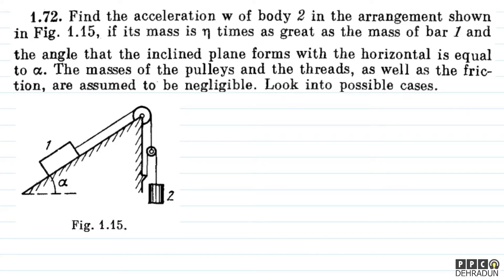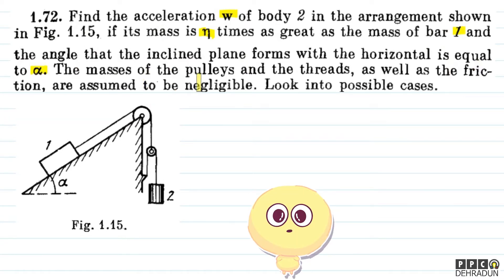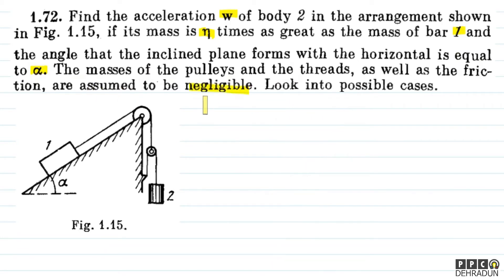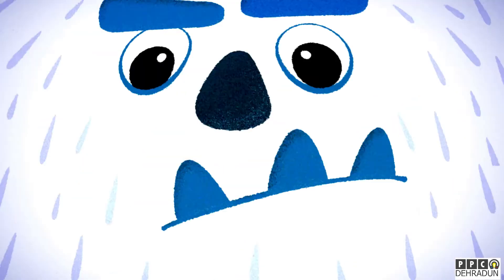The question says: find the acceleration w of body 2 in the arrangement shown in figure 1.15, if its mass is eta times as great as the mass of bar 1, and the angle that the inclined plane forms with the horizontal is equal to alpha. The masses of the pulleys and the threads as well as the friction are assumed to be negligible. Look into possible cases.